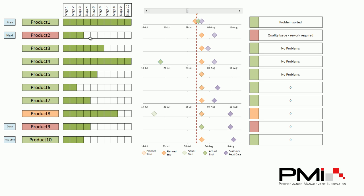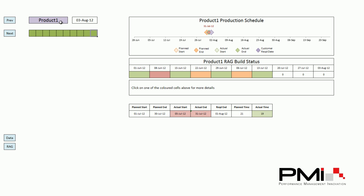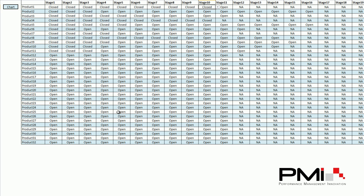It doesn't need to be linear — you could close off later stages before earlier stages, assuming that's how the project or product progresses. It's entirely up to you. If you wanted more than 10 stages, or if each product or project had a different number of stages, you can accommodate that. Looking at the product data, anything with an NA means it's not applicable. Product 4 has got 10 stages all closed so it's complete, and the remaining entries are not applicable — there are no more stages than that.